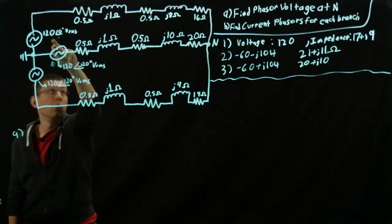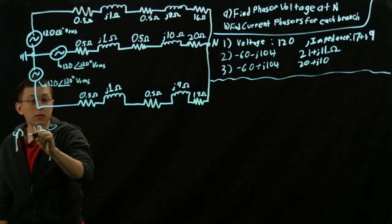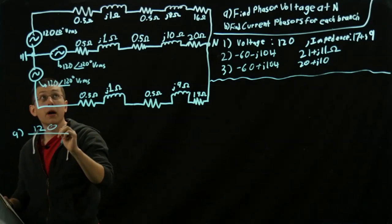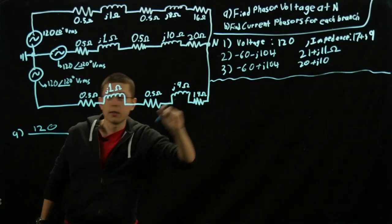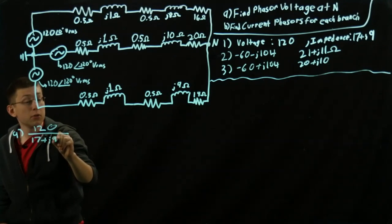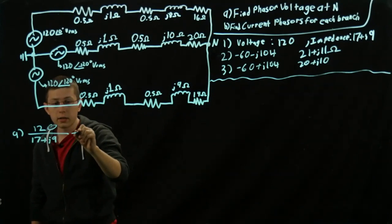We're going to have 120 volts divided by our load right there, 17 plus J9. I find that with these problems, if you do those conversions in the very beginning, it saves you a lot of time later on.